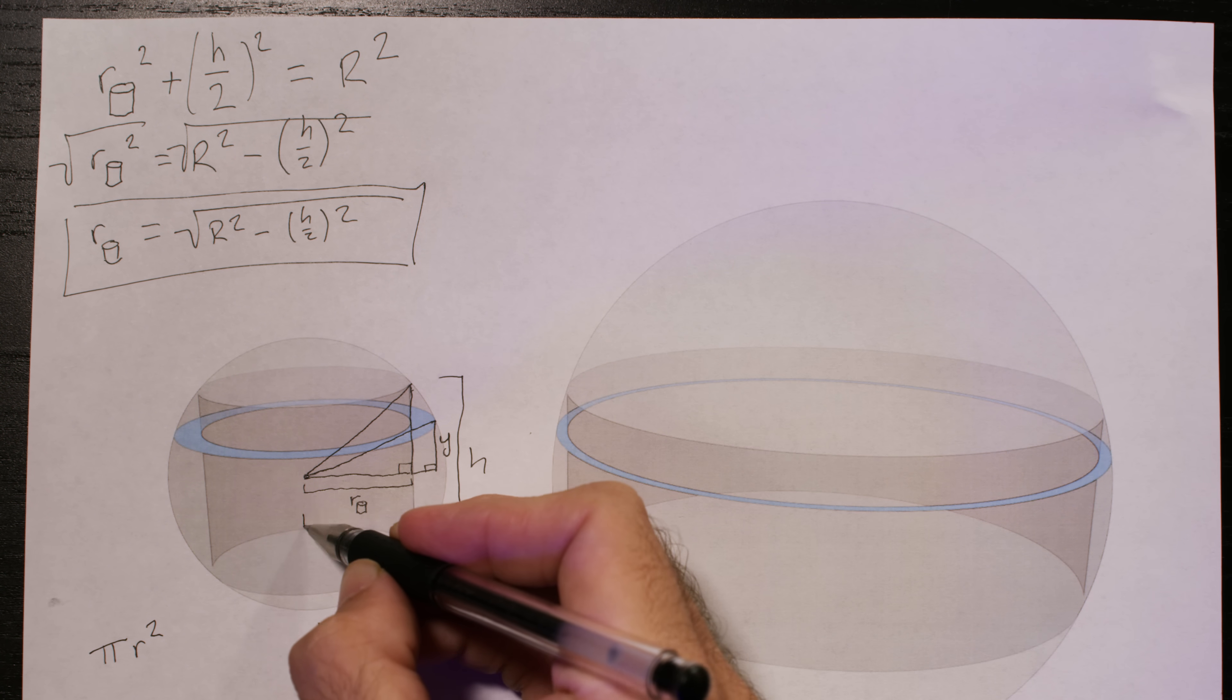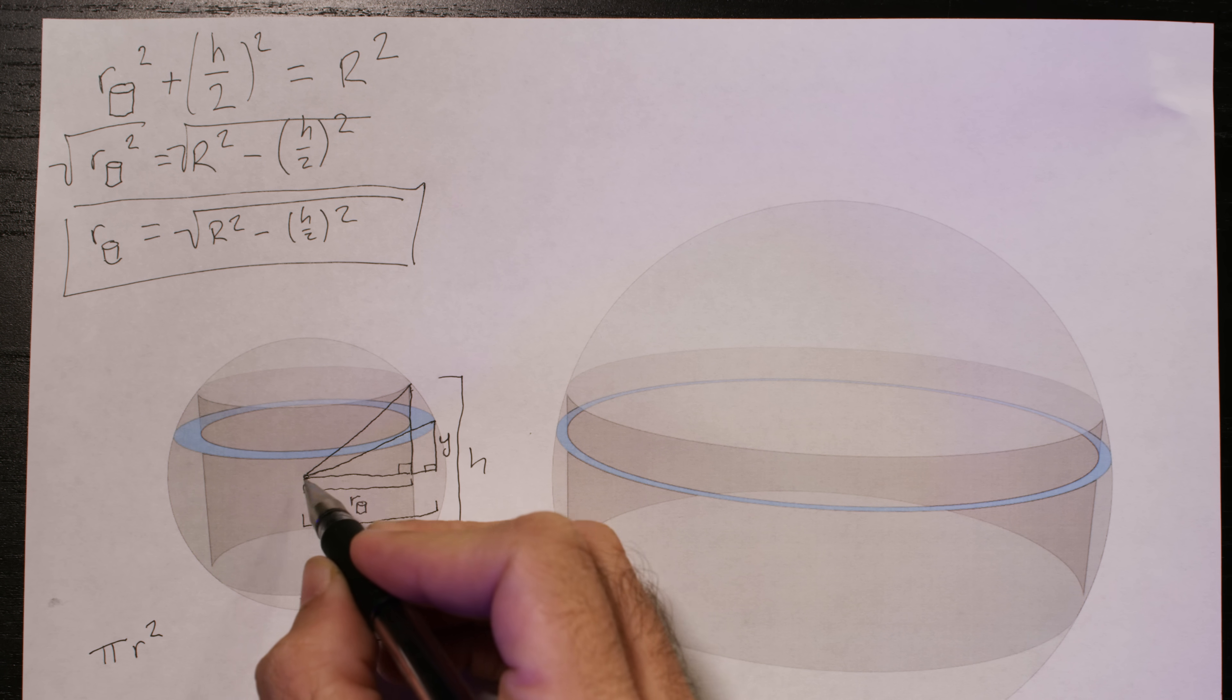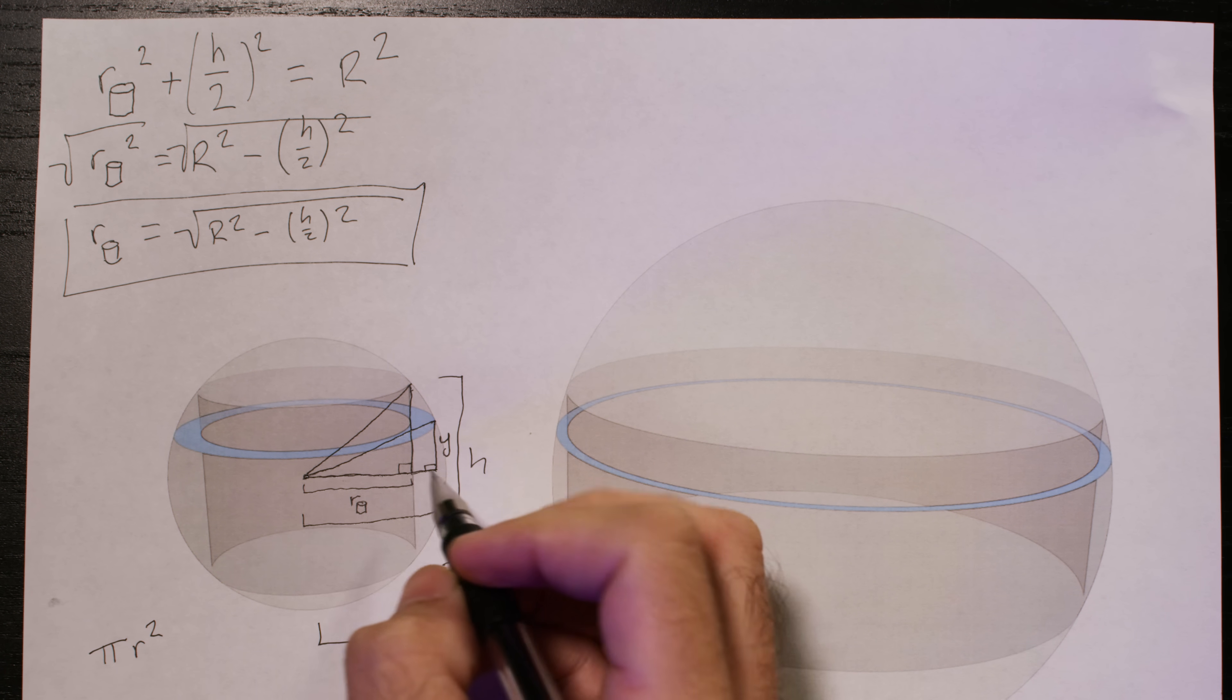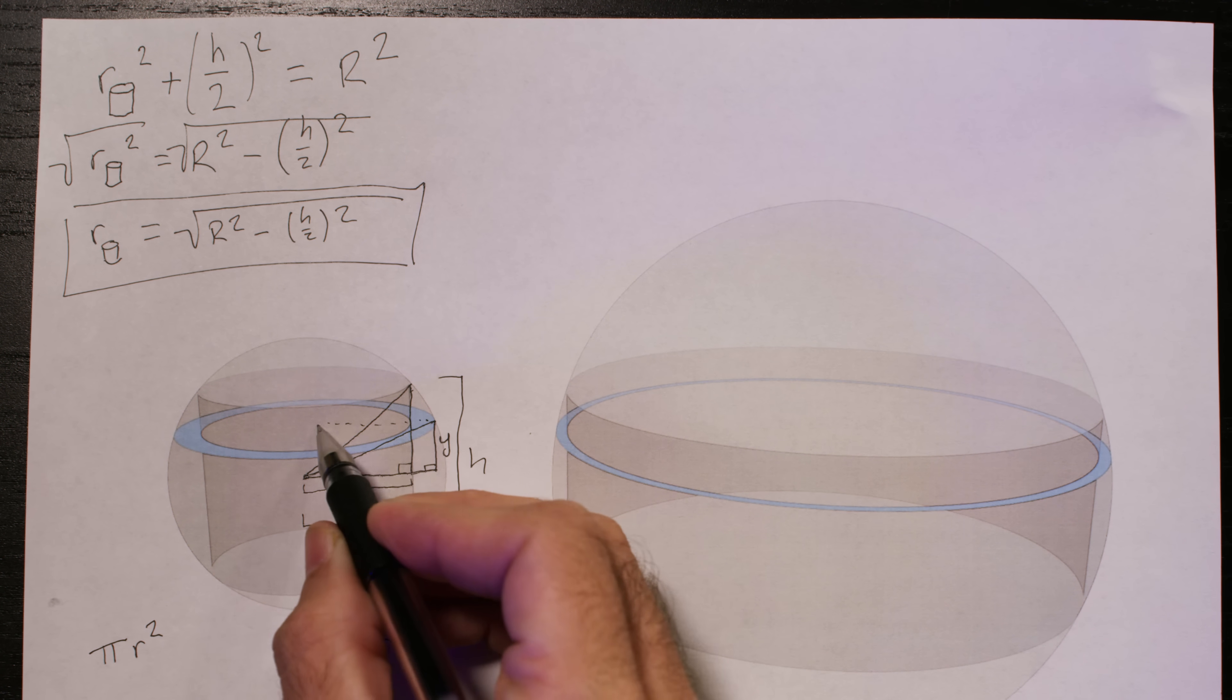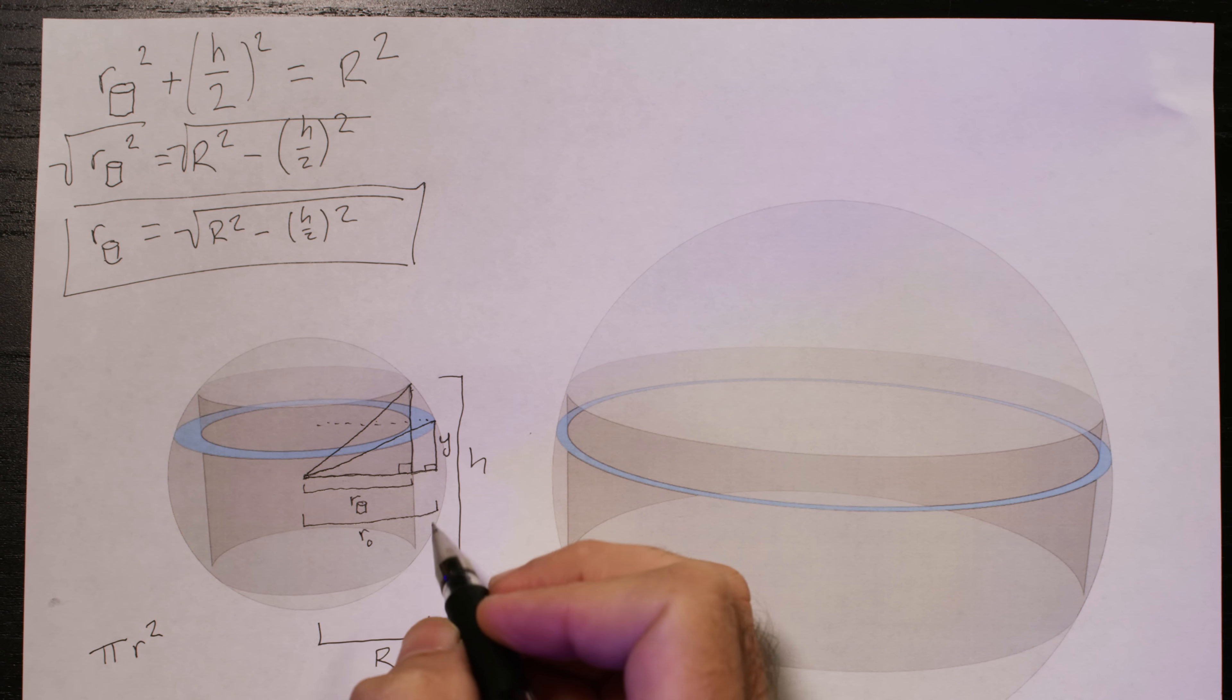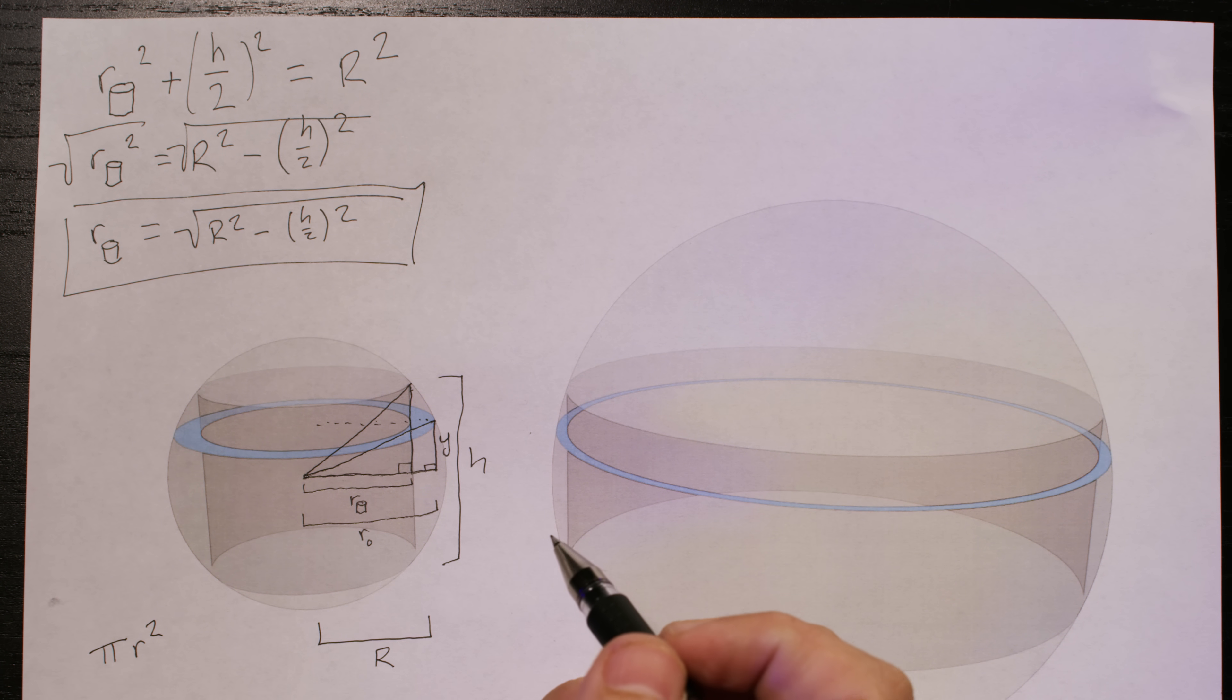Let's call this height Y. And notice that this distance now, the side of the triangle down here, is actually the radius of the circle cross section up here. They're both equal. So we need to want to solve for this, the radius of the circle that is the sphere's cross section.